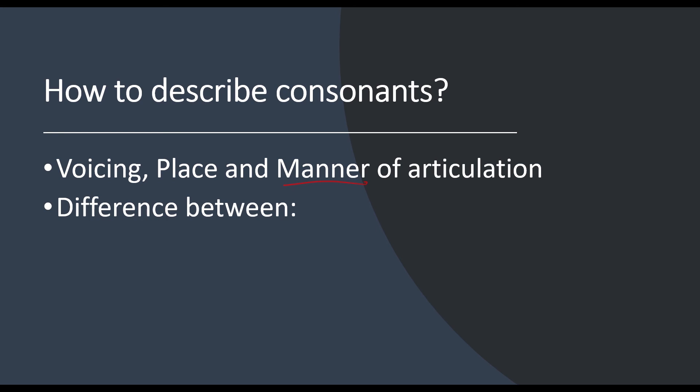When we think about manner of articulation, let's think about the differences in how consonants are produced. Try producing these sounds yourself and see if you can pick out the difference and what's happening in your mouth that makes these sounds different. The first sound is n, versus the second sound, which is l. If we look at the place of articulation, both sounds are being produced at exactly the same place, but they are still different. Can you tell the difference?